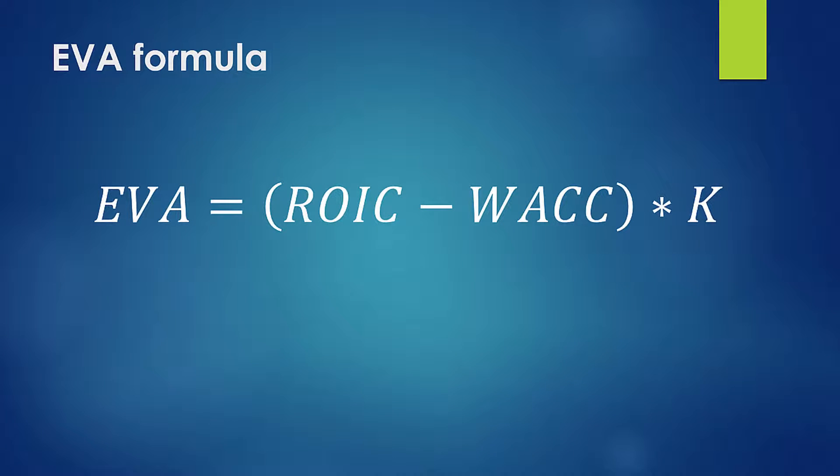Here we see that EVA equals ROIC minus WACC times capital. ROIC stands for Return on Invested Capital. WACC, of course, stands for your Weighted Average Cost of Capital. And capital, of course, is capital — the assets that you are investing in this business.